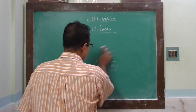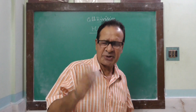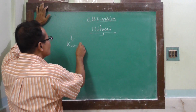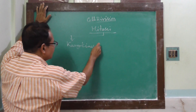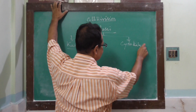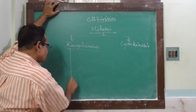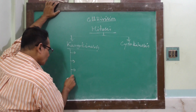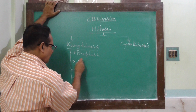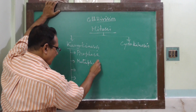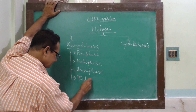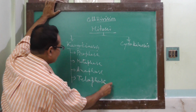Now, the process of mitosis. Mitosis cell division occurs in two stages: number one, karyokinesis — that is, nuclear division — and cytokinesis, that is, cytoplasmic division. Karyokinesis is divided into four successive phases: prophase, metaphase, anaphase, and telophase.